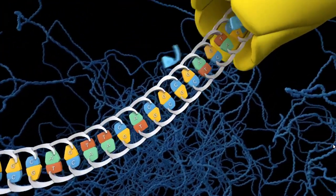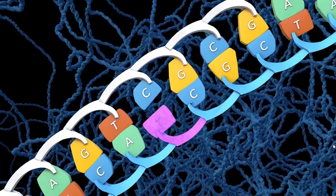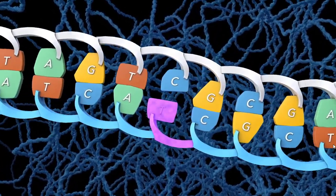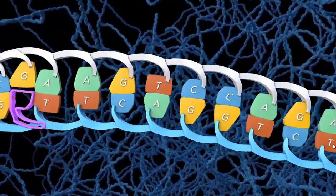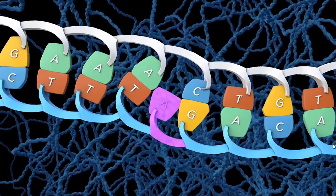As a cell copies its DNA before dividing, it makes occasional typos. Most commonly, a single base is substituted for another. Sometimes a base is deleted, or an extra base is added.